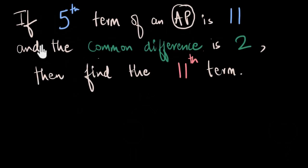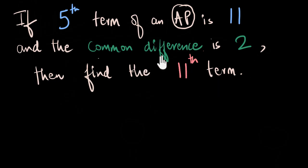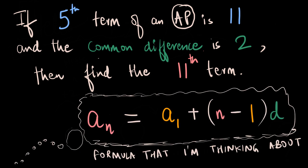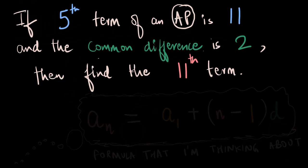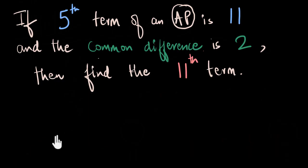Let's take a look at this AP problem. If the 5th term of an AP is 11 and the common difference is 2, find the 11th term. When you look at this problem, you see keywords like AP, common difference, and terms — and usually the nth term formula comes to mind. What I want to do in this video is not use that formula, but instead give you a more visual, more intuitive way to think about these problems. As a bonus, we'll get a better feel of where that formula actually comes from.